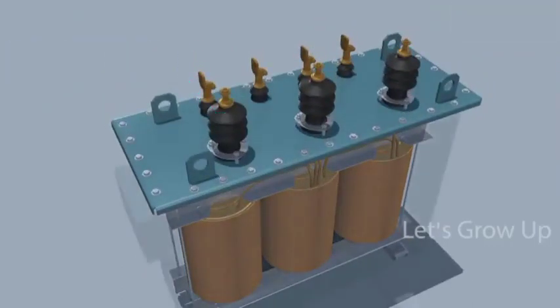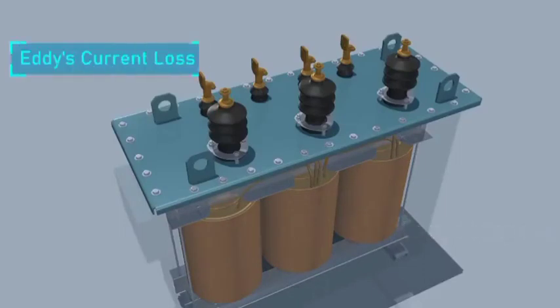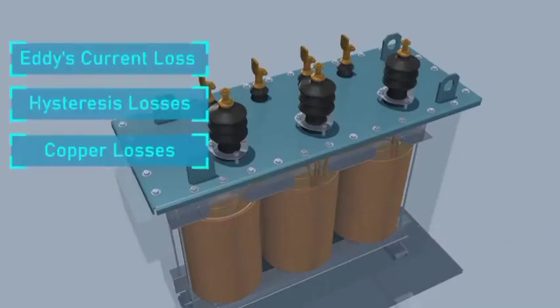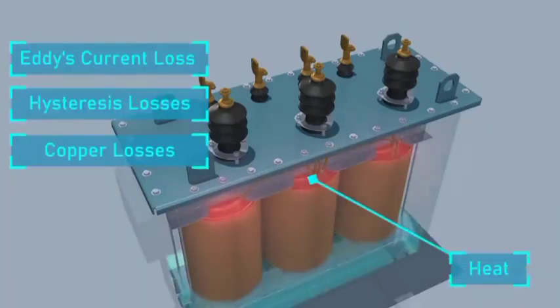During its working or transferring the power from the primary to the secondary winding, various energy losses happen like eddy current losses, hysteresis losses, and copper losses. All these losses generate heat. To prevent heat, transformer oil is used inside the tank.